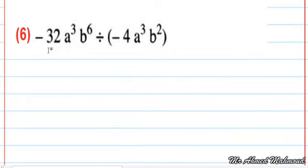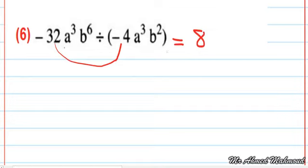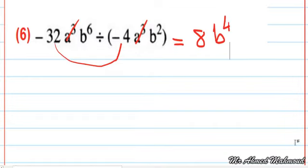Next: negative 32 over negative 4 equals positive 8. Then a power 3 divided by a power 3 — subtract the powers: 3 minus 3 means a cancels. b power 6 minus b power 2 equals b power 4.